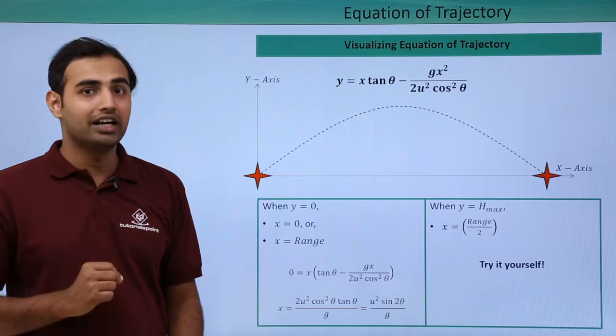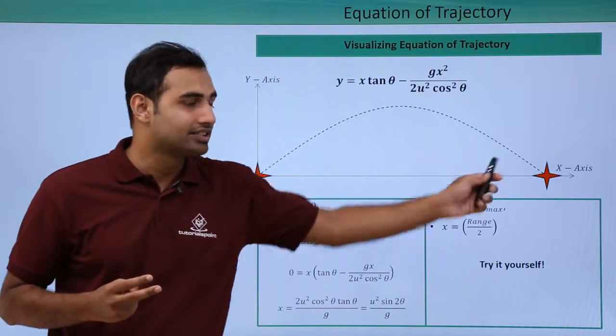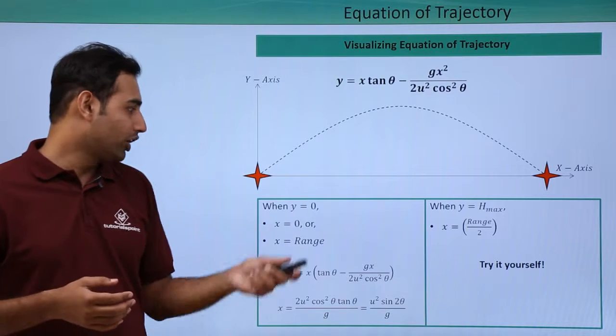I will immediately get one of the solutions as origin x equal to 0, and the second solution as x equal to range. So I can directly obtain the range formula from the equation of trajectory also. So see how we do it.